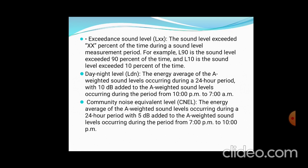The community noise level (Cdn) is the energy average of the weighted sound level occurring during a 24-hour period, with 5 decibels added to the weighted sound level during the period from 7 PM to 10 PM. Day-night level covers the complete night period, while community noise covers the day areas.